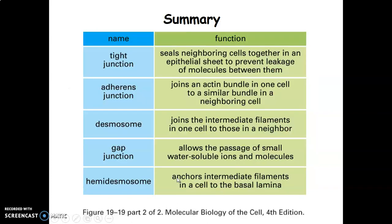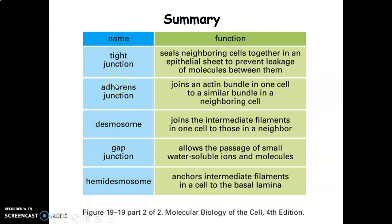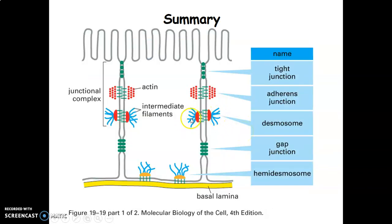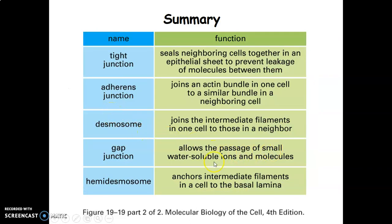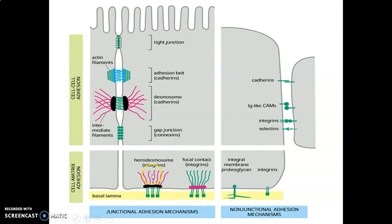Tight junctions seal neighboring cells together to prevent leakage of molecules between cells. Adherens junctions join actin bundles of one cell with those of a neighboring cell. Desmosomes join intermediate filaments of one cell to those of a neighbor. GAP junctions allow passage of small water-soluble ions and molecules from one cell to another. Hemidesmosomes anchor intermediate filaments onto the basal lamina.